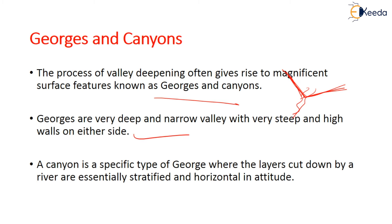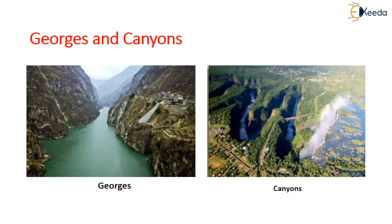A canyon is a specific type of gorge where the layers are cut down by a river and are especially stratified — that is, layered — and horizontal in altitude. A gorge is a narrow stream-like structure, while a canyon is cut horizontally through the layers.